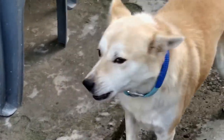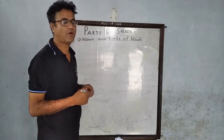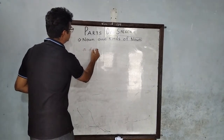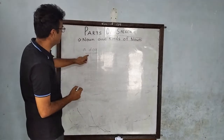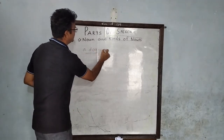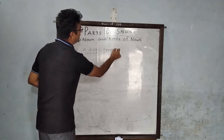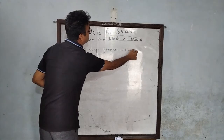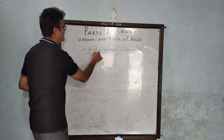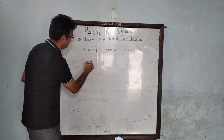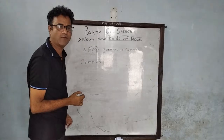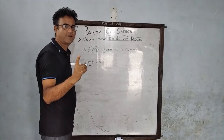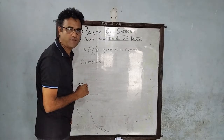Good morning. I saw a dog. So this dog is general or common. This dog here is a common noun. The name of that dog was Tommy.